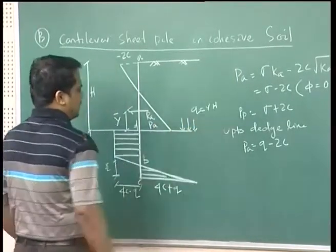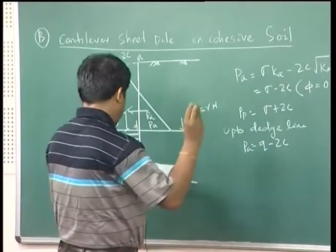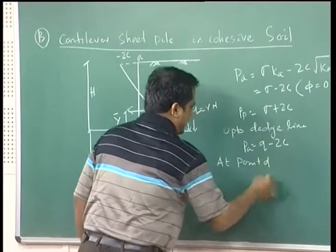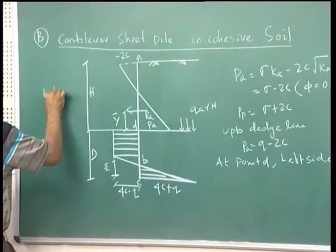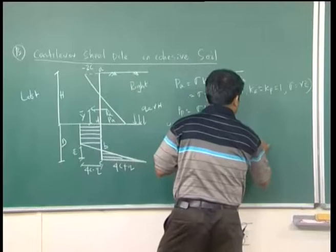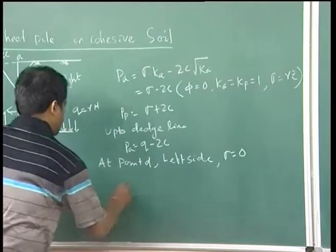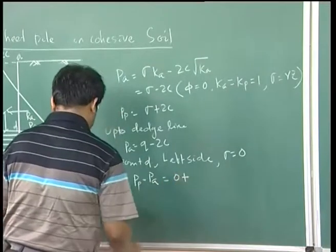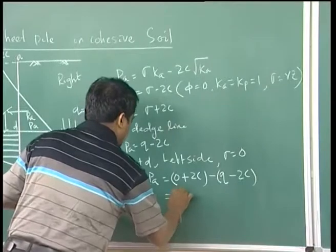At point D, on the left side of the sheet pile at the dredge line, the overburden pressure is zero. Hence the net pressure at D on the left side: σ = 0, so PP − PA = 0 + 2C − (−2C) = 4C − Q.